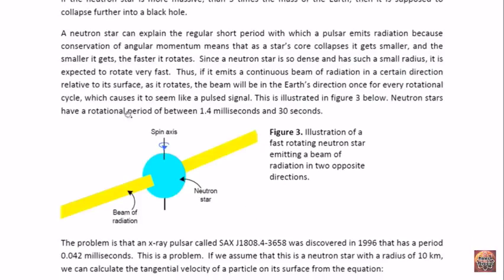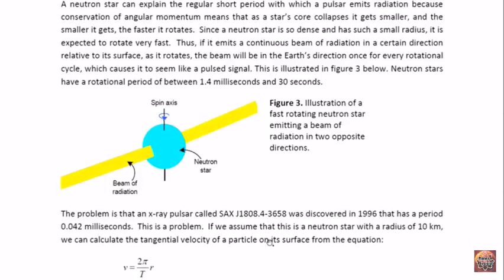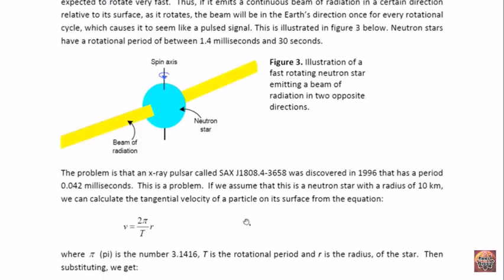Neutron stars have a rotational period of between 1.4 milliseconds and 30 seconds. This means that a star with a period of 1.4 milliseconds is supposed to do one rotation in 1.4 milliseconds. But there's a problem with that.